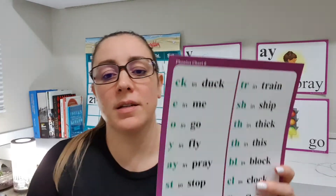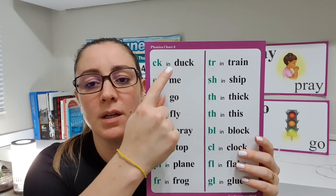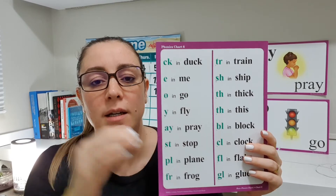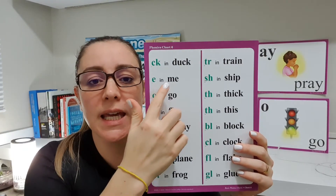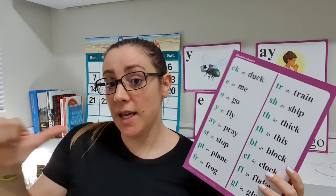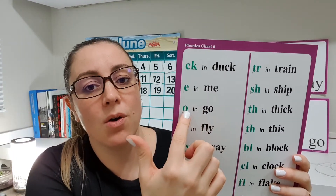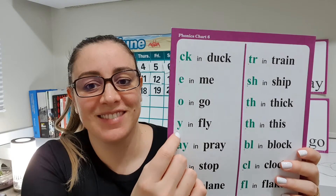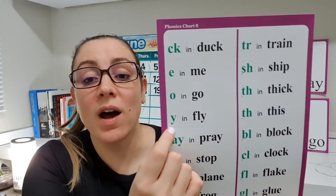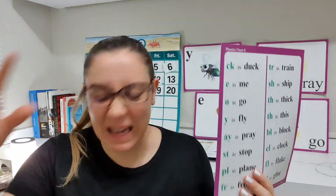Do you remember that chart with special sounds? K in duck — C, K, K, K. I in me — I, I, I. O in go — O, O, O. I in fly — Y, ai, ai, ai. A in pray — A, Y, A, A, A.